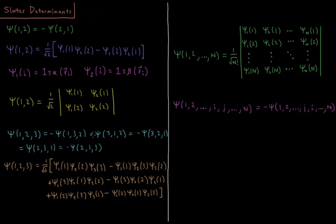So psi equals minus psi. And then that's true for all 6 possible permutations of the numbers 1, 2, and 3. So if we do an even number of exchanges, we get a positive sign. If we do an odd number of exchanges relative to the beginning, we get a negative sign.